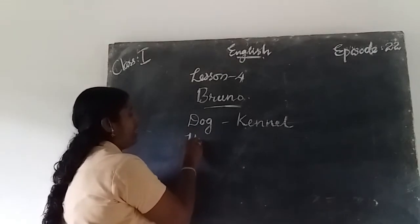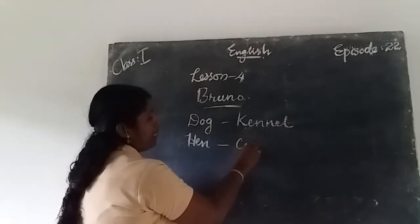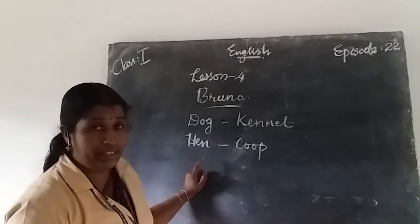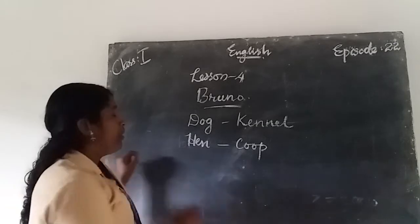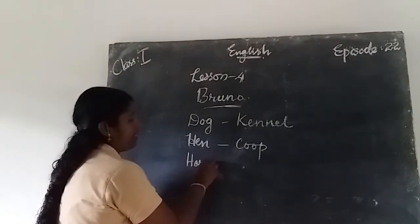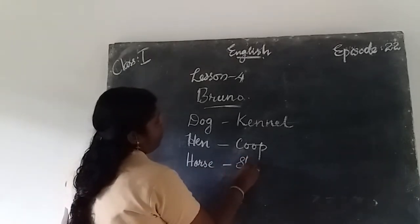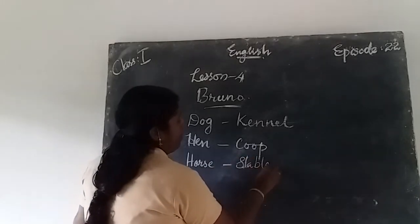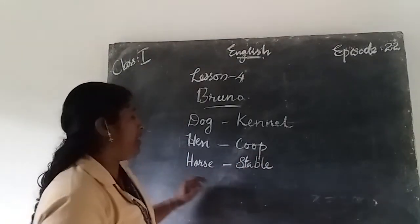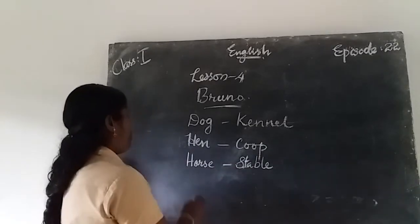A hen lives in a coop — K-O-O-P. The house of a hen is coop. The house of a horse is stable — H-O-R-S-E lives in a stable, S-T-A-B-L-E, stable.